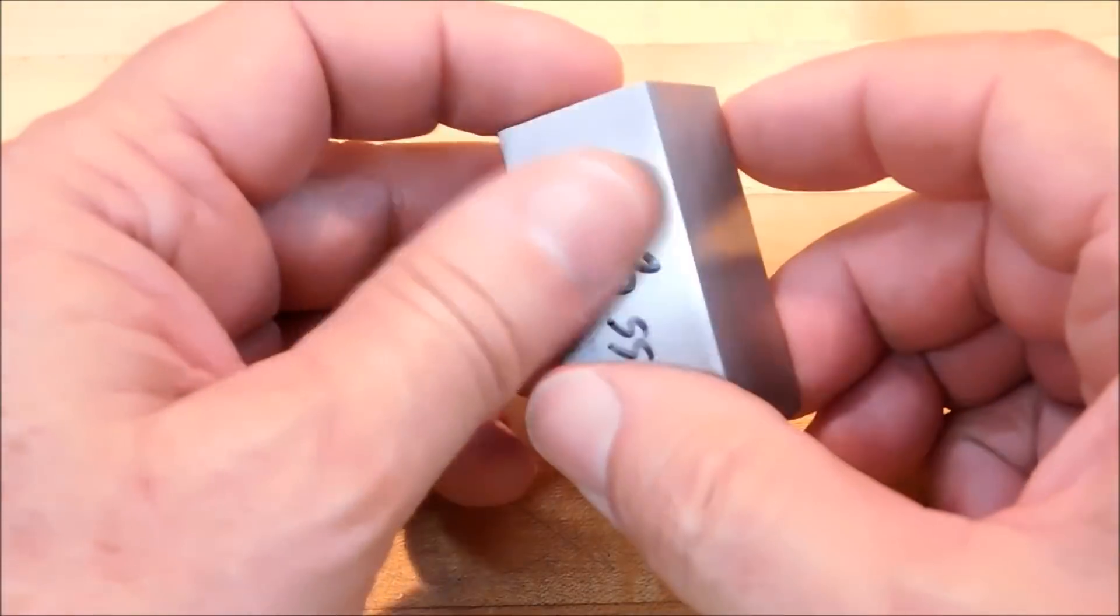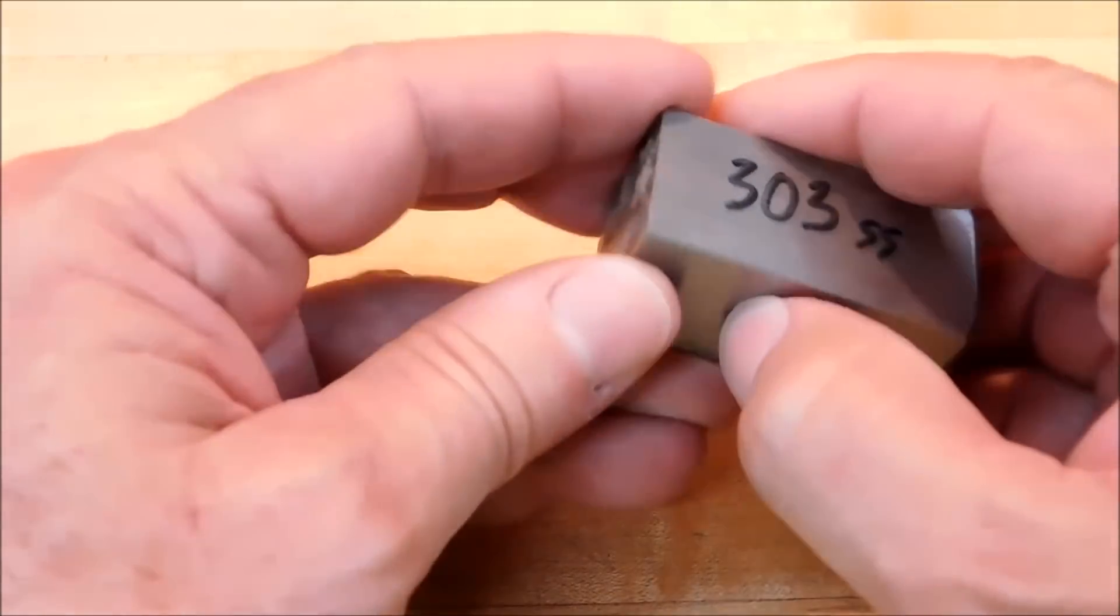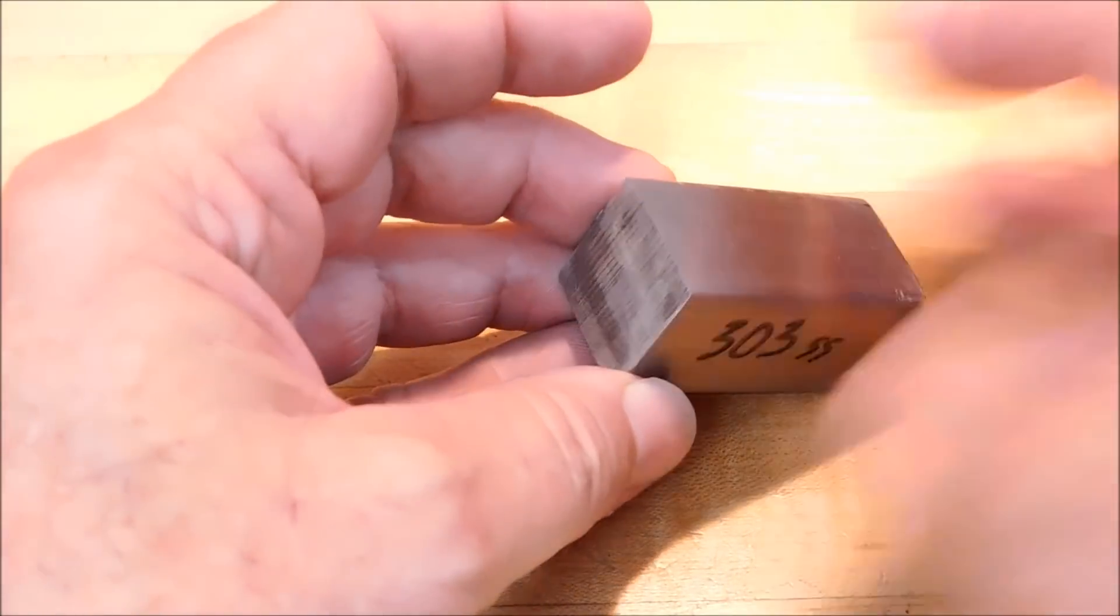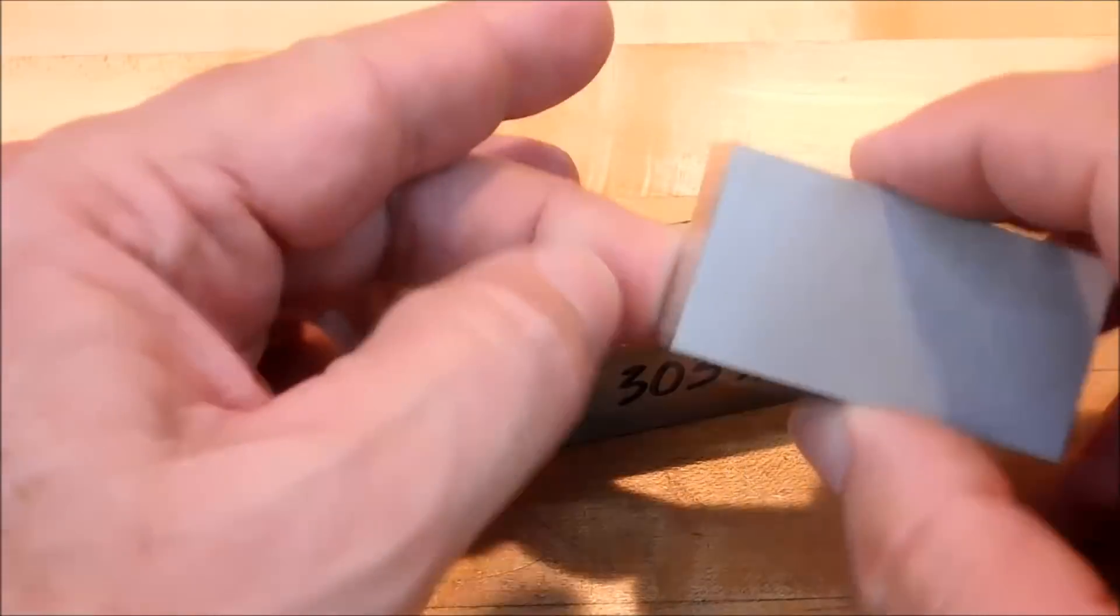Now, here's a chunk of 303 stainless left over from a previous job, saw cut. Brutal edges on it, you could probably shave with this part. Same thing with this aluminum part, saw cut, band saw cut, big hangers on the back.